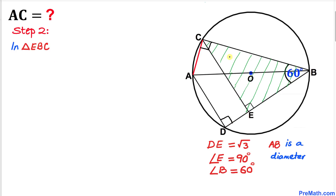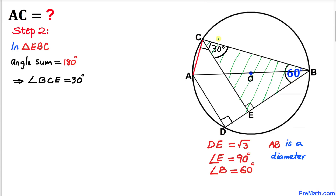Let's focus on triangle ABC. We know that angle B is 60 degrees and angle ACB is 90 degrees, so this remaining angle has got to be 30 degrees, since the sum of the angles in any triangle must be 180 degrees. So therefore angle BCE turns out to be 30 degrees.